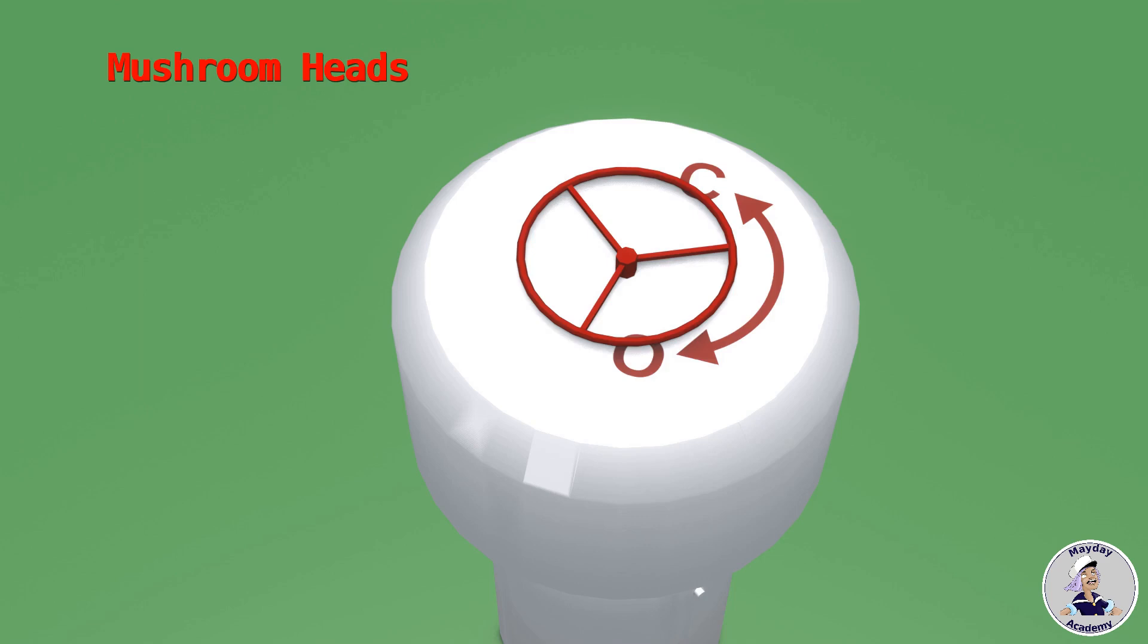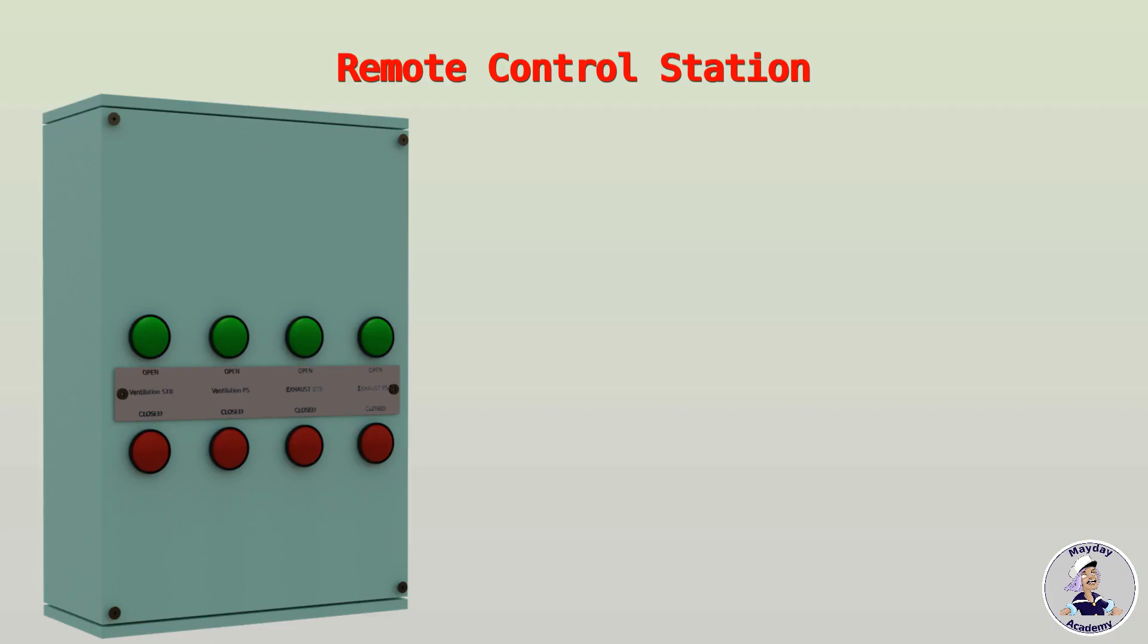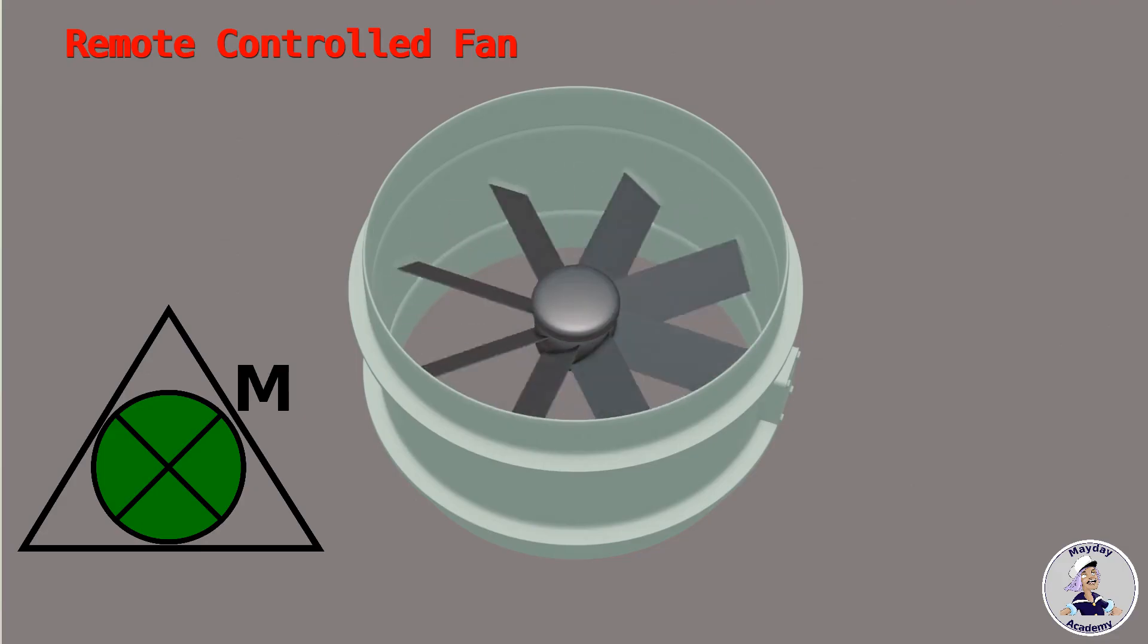Flaps, dampers and ventilation fans can be remotely operated. Control stations for remotely operated devices are indicated by this triangular icon. Inside the triangle, the type of device controlled by the respective station is indicated.